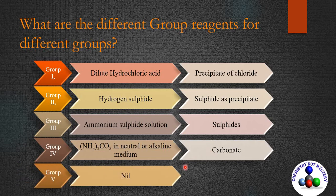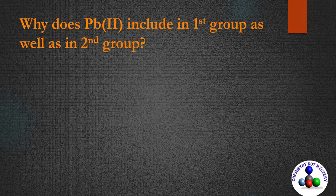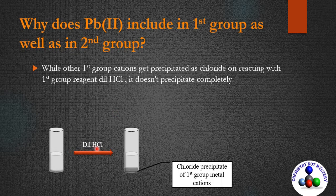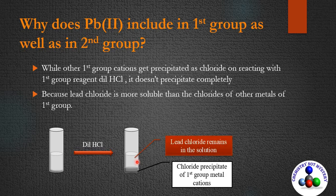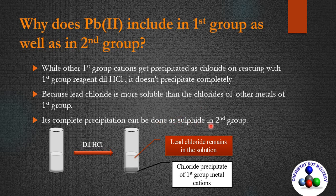The fifth group has no group reagent. Now I will explain why lead(II) is included in both the first and second group. While other first group cations get completely precipitated as chlorides on reacting with dilute hydrochloric acid, lead(II) chloride is more soluble than the chlorides of the other first group metal cations, so it is not precipitated completely. Its complete precipitation can be achieved as a sulfide in the second group — that's why it is included in both.